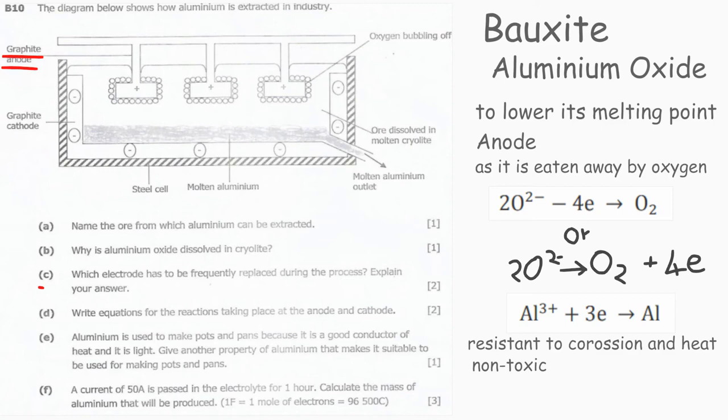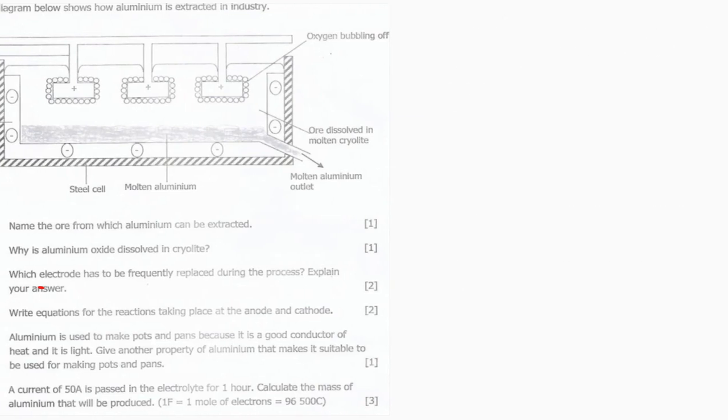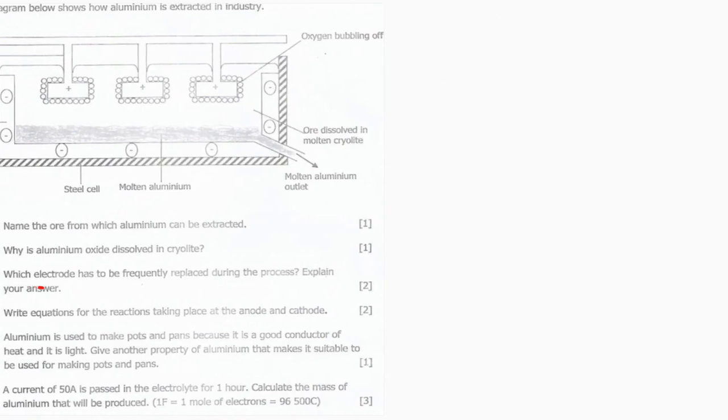Question F: A current of 50 amps is passed in the electrolyte for one hour. Calculate the mass of aluminum that will be produced. You have to follow me here because it involves calculations and you know, numbers. All right, the current is 50 amps.